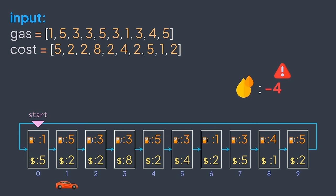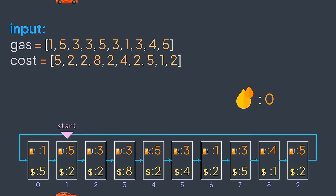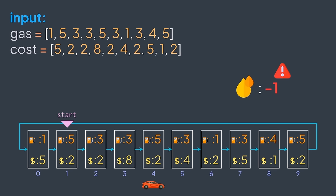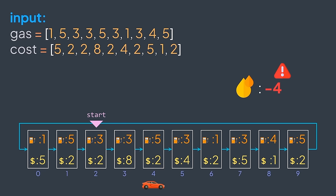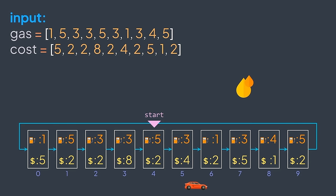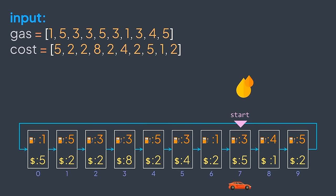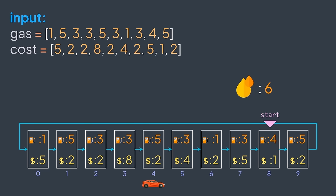Tracing through the example: station 0 — add 1, pay 5, cost becomes negative, eliminated. Station 1 — add 5, pay 2, add 3, pay 2, add 3, pay 8 — remaining became negative. Station 2 — add 3, pay 8 — remaining negative. Station 3 — add 3, pay 8 — negative. Station 4 — add 5, pay 2, add 3, pay 4, add 1, pay 2, add 3, pay 5 — negative. Station 5 — add 3, pay 4 — negative. Station 6 — add 1, pay 2 — negative. Station 7 — add 3, pay 5 — negative. Station 8 — we can complete the full cycle and return to station 8.